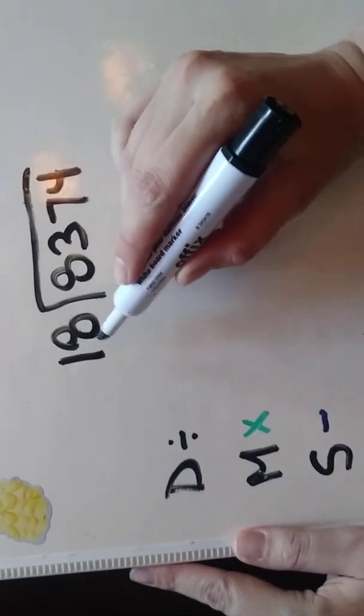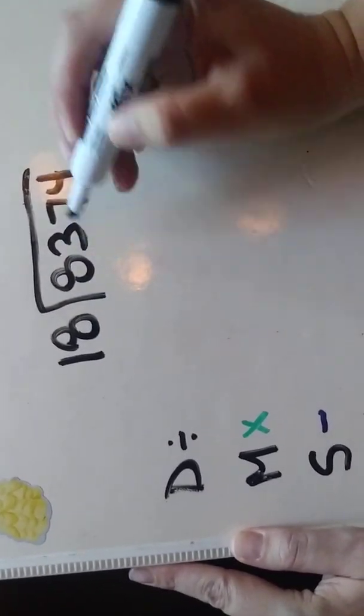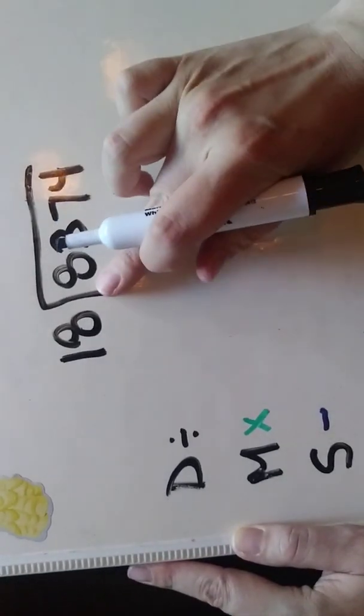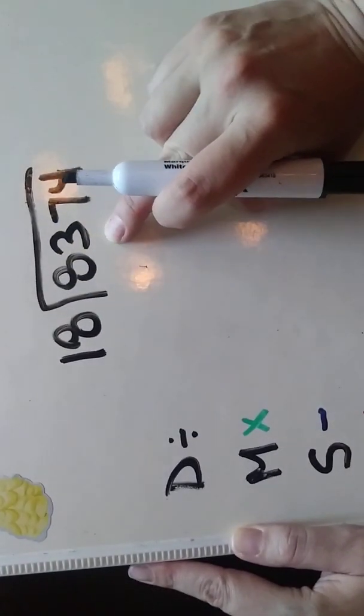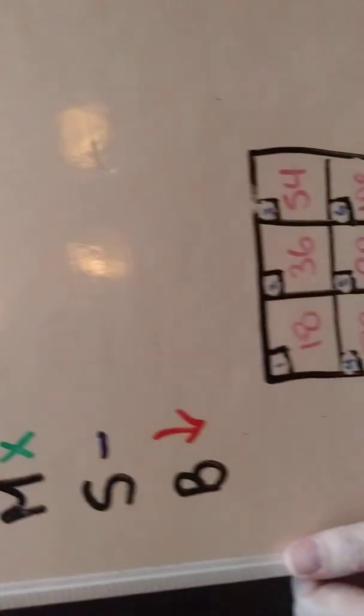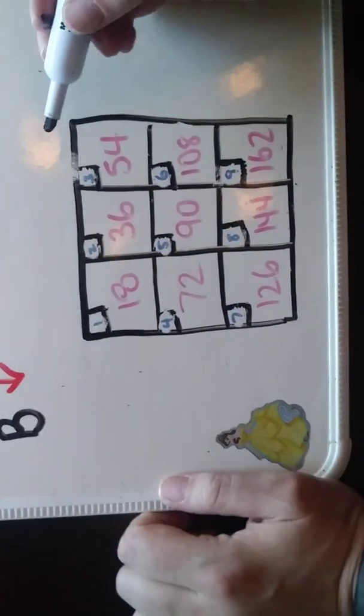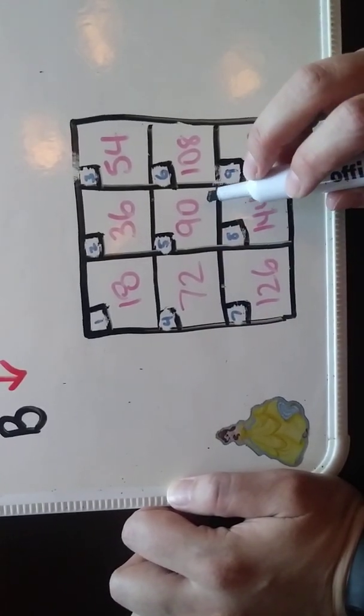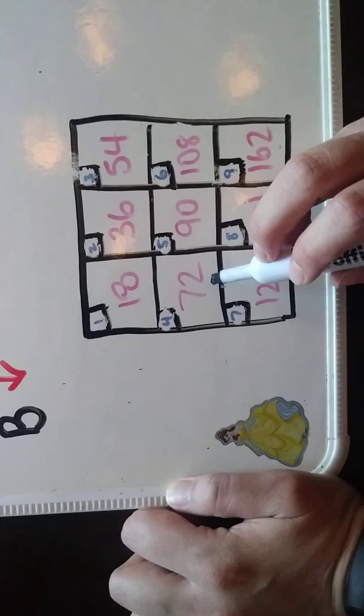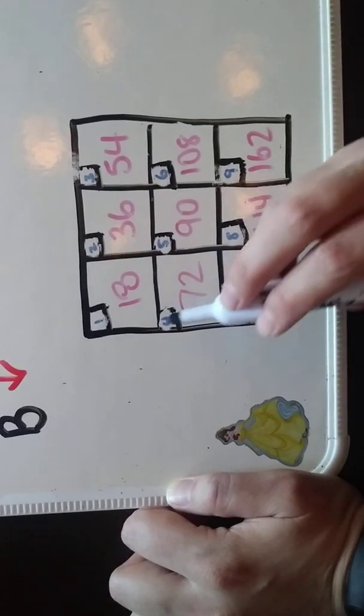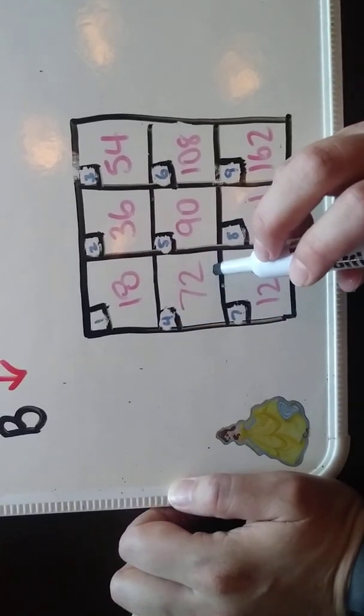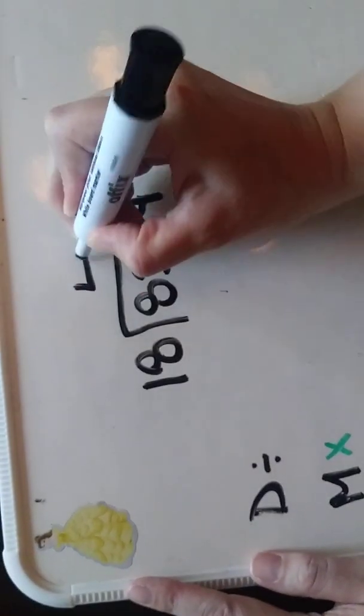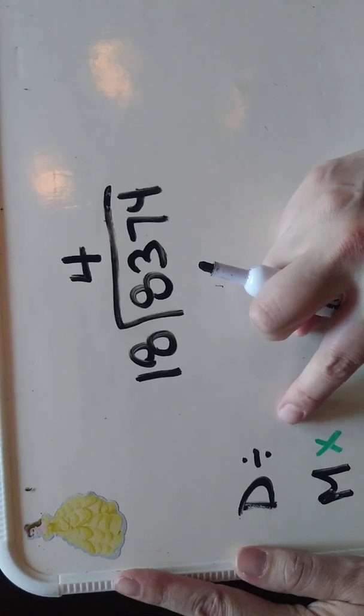So I already know that I can't do 18 going into 8 so I'm going to use the two digits. So how many times does 18 go into 83? So I'm going to look down here. So I'm trying to get as close to 83 as I can without going over. Well 90 is close to 83 but that's too much. 72 is it. So I know that 18 times 4 is 72. So I put my 4 up here. That's my first step in the division.